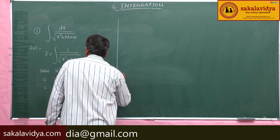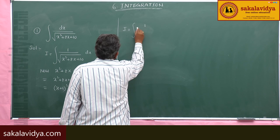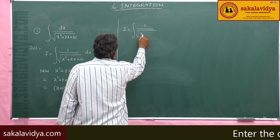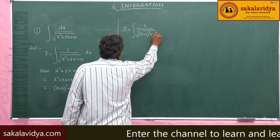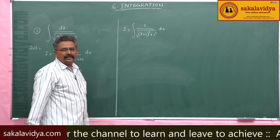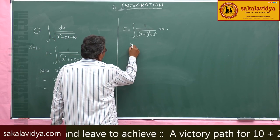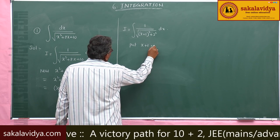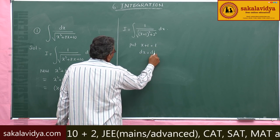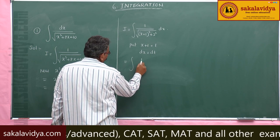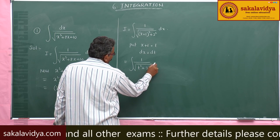Now I becomes the integral of 1 divided by the square root of (x plus 1) whole square plus 3 squared, dx. Let us substitute x plus 1 equal to t. If x plus 1 equals t, then dx equals dt. So this becomes the integral of 1 divided by the square root of t squared plus 3 squared, dt.